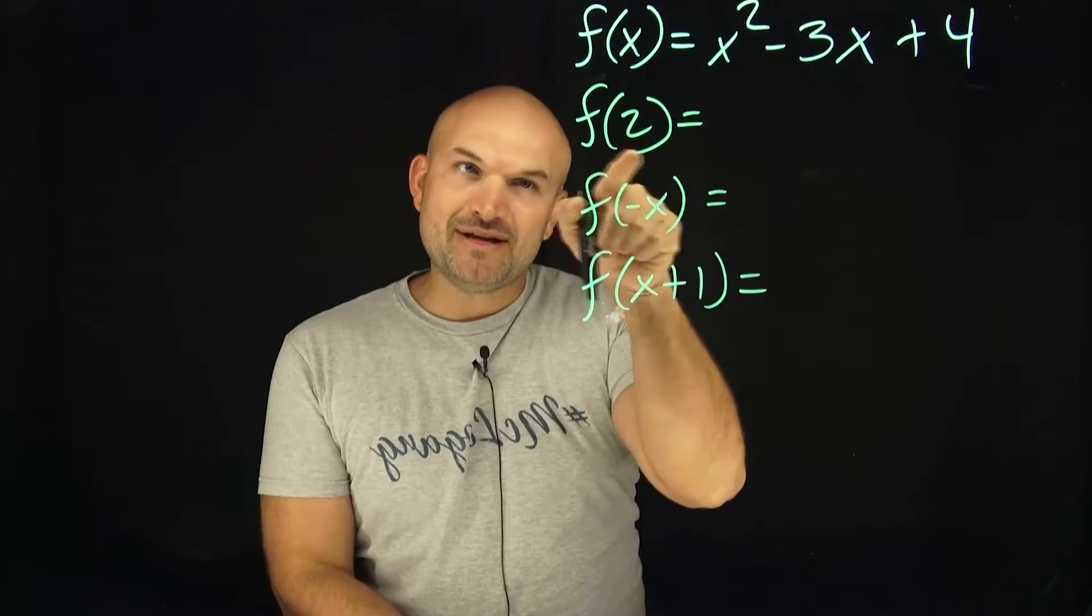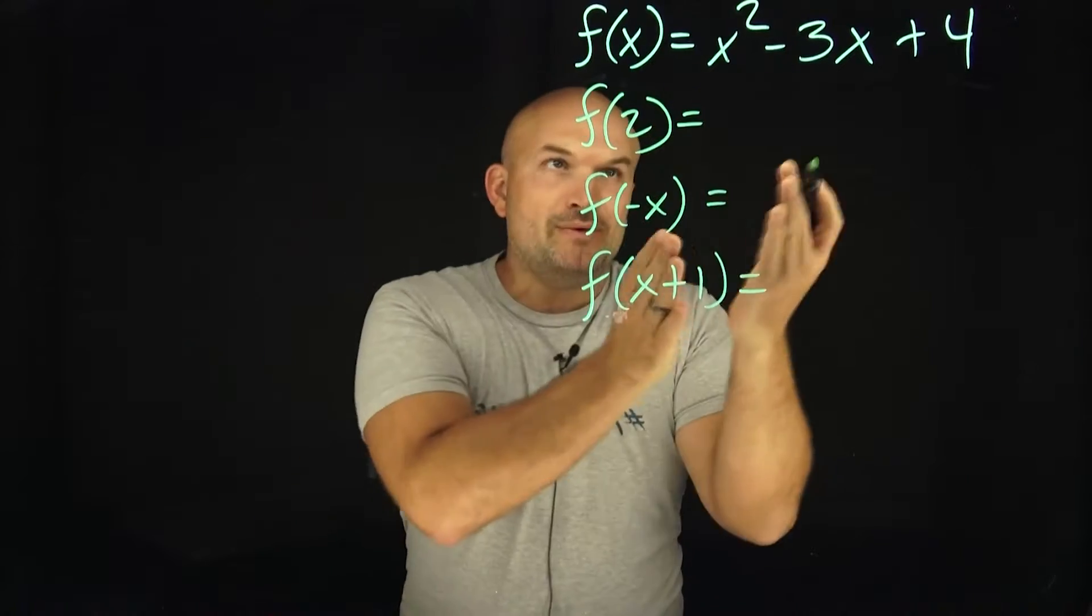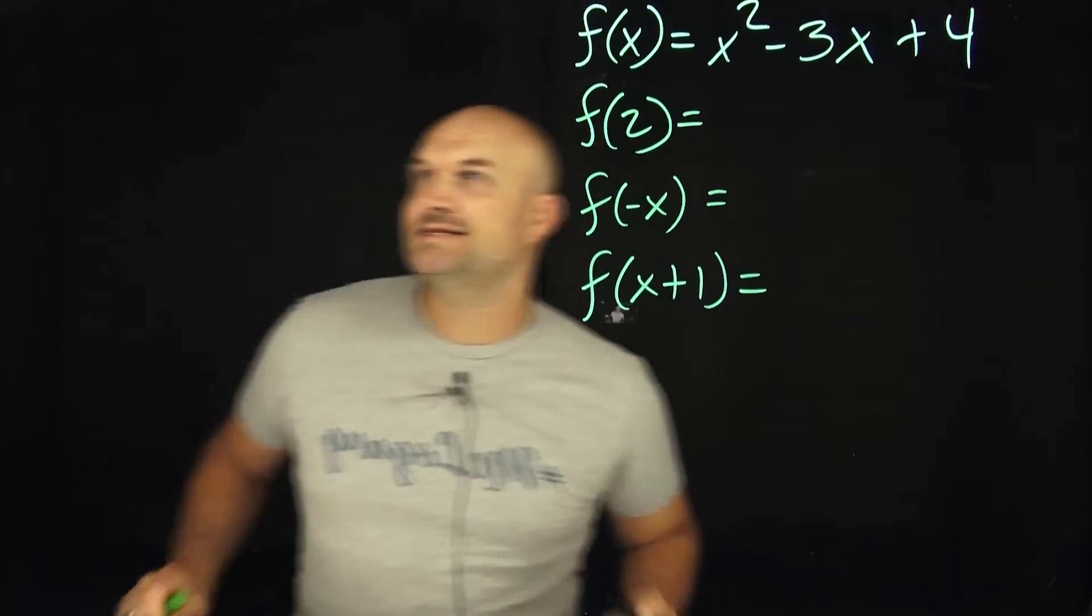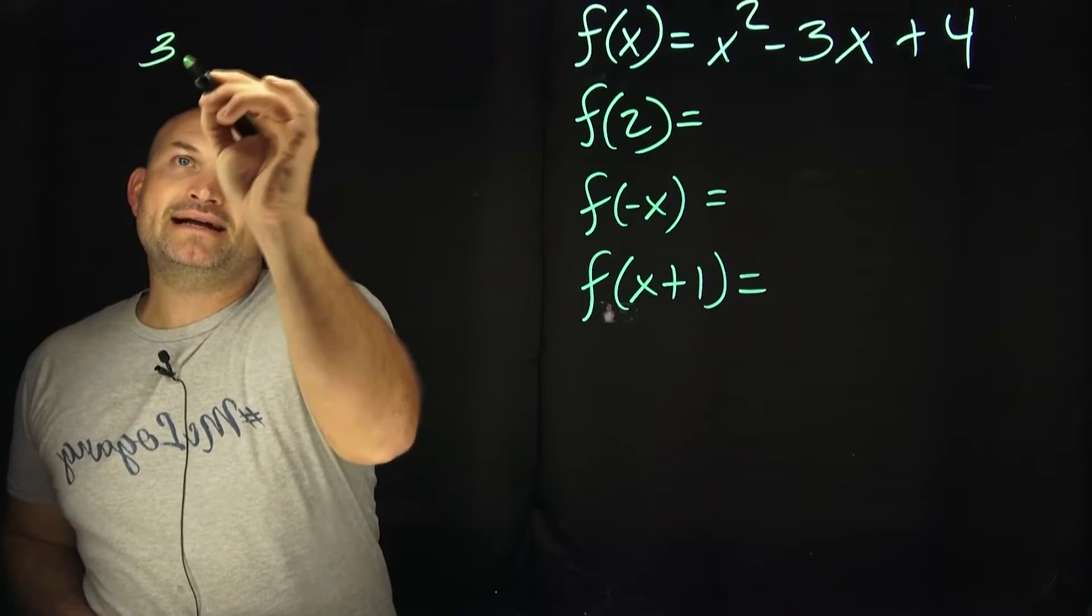Again, before we can get to these two, we've got to make sure we understand what exactly does f of 2 equal when we have this function x squared minus 3x plus 4. And to be able to understand this, let's kind of go back to the good old days.